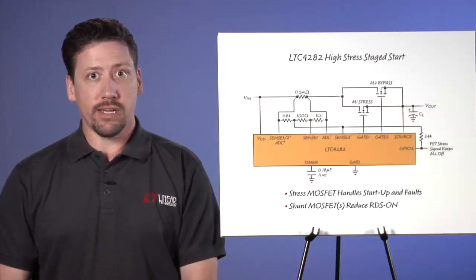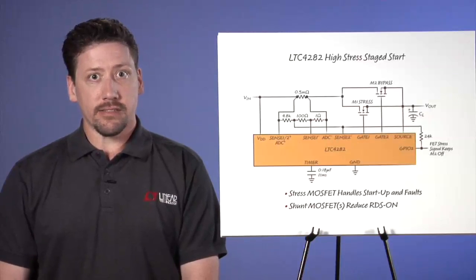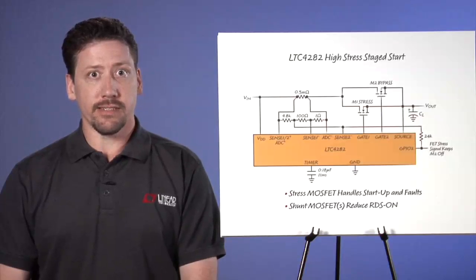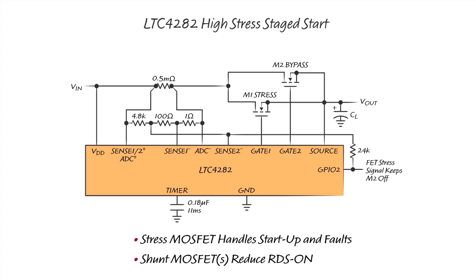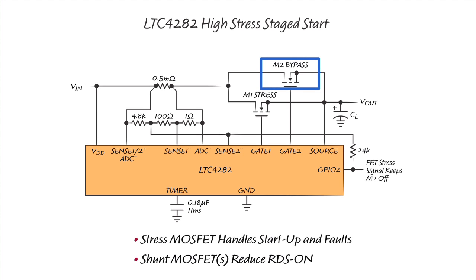The second staged application we call high stress staged start. This configuration benefits applications where loads consume significant DC power while inrush is occurring, or for systems that must operate through significant input voltage steps without generating a fault. Such input voltage steps occur when redundant supplies are connected or disconnected from the input power rail. In this configuration, the stress MOSFET has a large SOA that can start the load at full power. Once the output is up and the stress MOSFET's gate is fully enhanced, one or more inexpensive low-RDS(on) bypass MOSFETs are turned on to reduce power consumption in the MOSFETs to a reasonable level. The bypass MOSFETs are turned off whenever current limiting occurs in order to divert power dissipation to the high-SOA stress MOSFET.